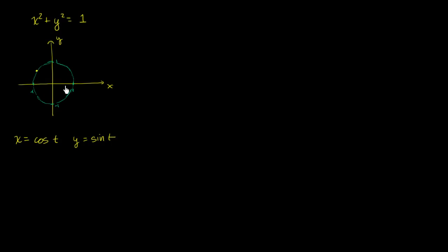We know that t corresponds to the angle with the positive x-axis — that right over there is t. Wouldn't it be neat if there were a similar analogy, not for the unit circle, but for something we could call the unit hyperbola? So that's our little review of trigonometry — traditional trigonometry.